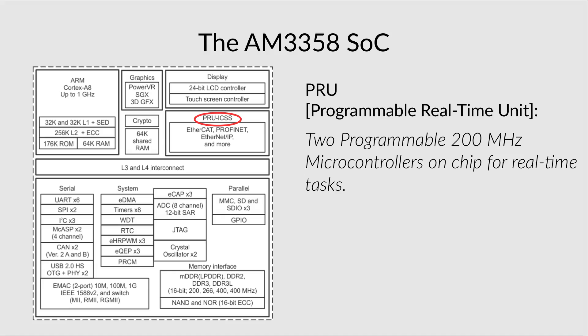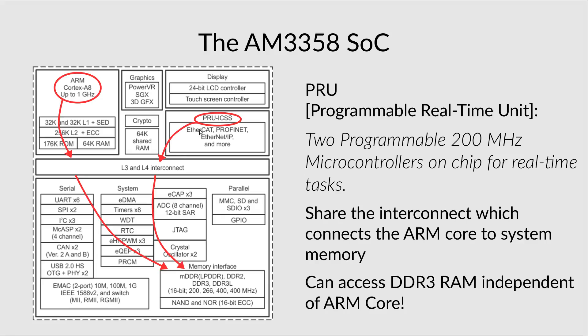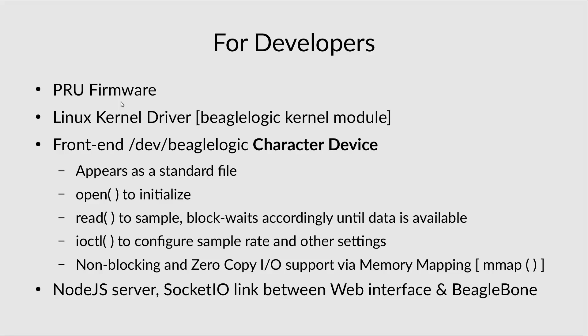Now for some technical details. The BeagleBone Black features a 1 GHz main system-on-chip and two PRUs — Programmable Real-Time Units — which are microcontrollers dedicated to real-time tasks. The PRUs are what make BeagleLogic possible because they can talk directly via the L3 interconnect to the system memory without intervention from the ARM core, giving direct access to the 512 megabytes of RAM.